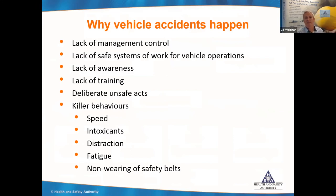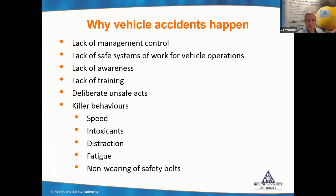So why do vehicle accidents happen? First, lack of management control — people didn't think about it, just put the vehicle into operation and hoped for the best. That can't work; it has to be managed and controlled. Second, lack of safe systems of work for vehicle operations — you have to think about vehicle operations and put safe systems in place so that if adhered to, accidents will be prevented. Third, lack of awareness on the part of everyone: the people managing the situation, the drivers, and the people in and around the vehicles.